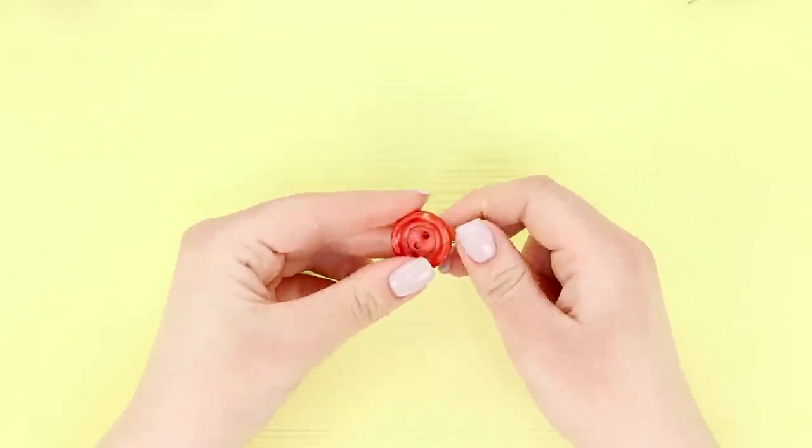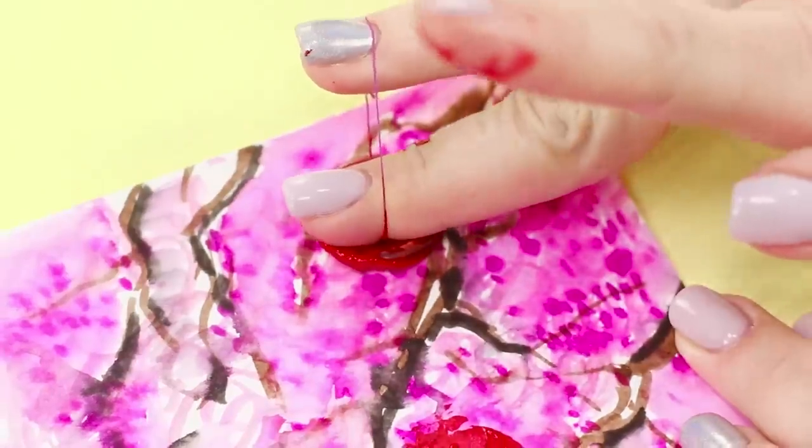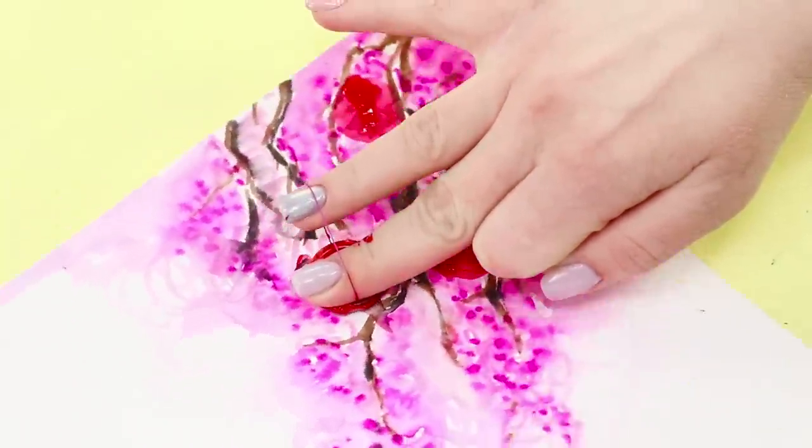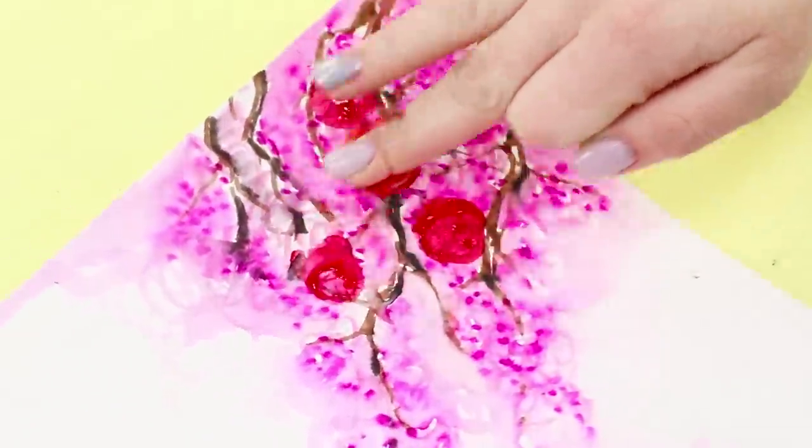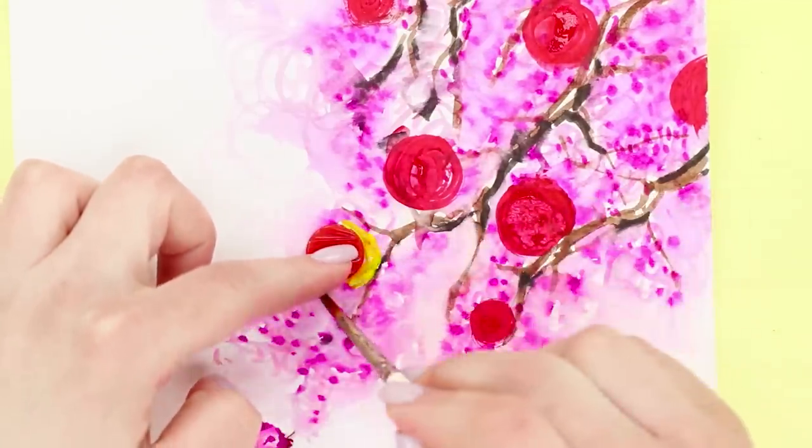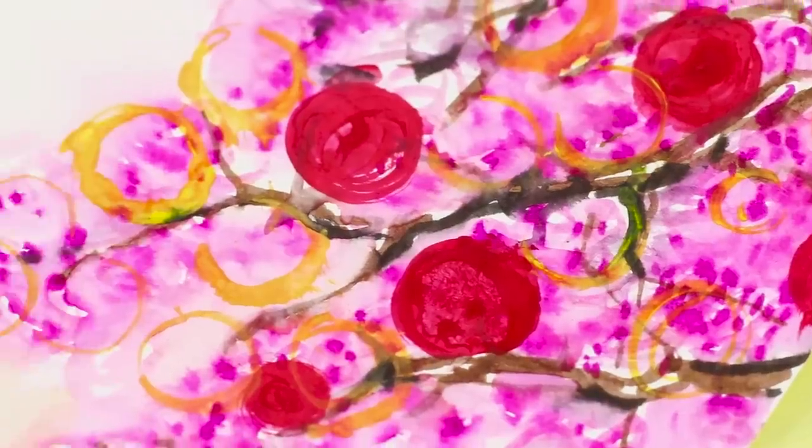And now take a button and hang it on a string. Dip it in the paint and print it on paper. Take a smaller button and just trace over the outline like this. Even a cat can't resist these apples! I wonder what they taste like!